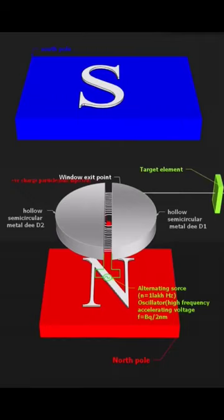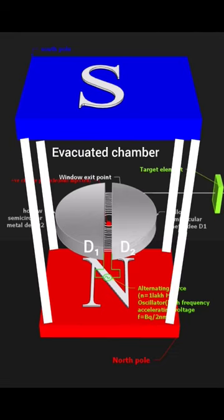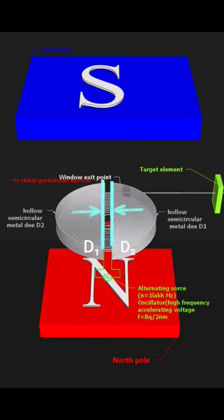A cyclotron consists of two hollow semicircular metal ds, d1 and d2. They are covered under an evacuated chamber. Both ds have some distance between them that is filled with a source of ions.